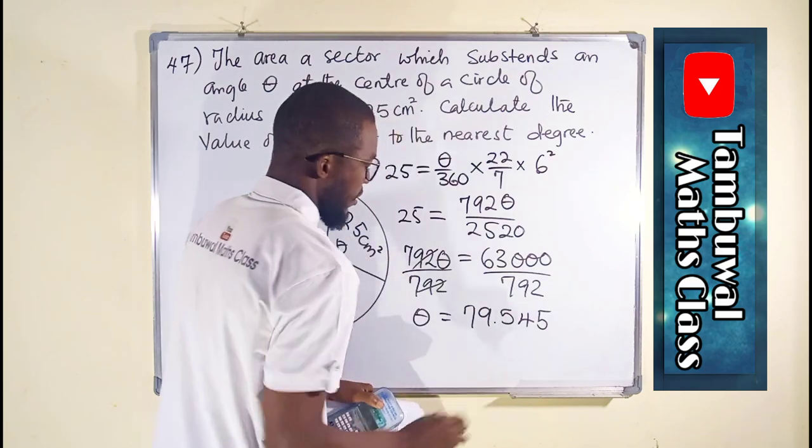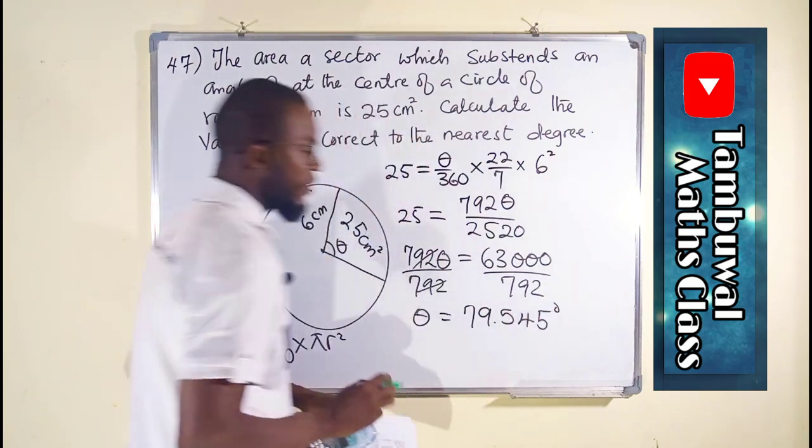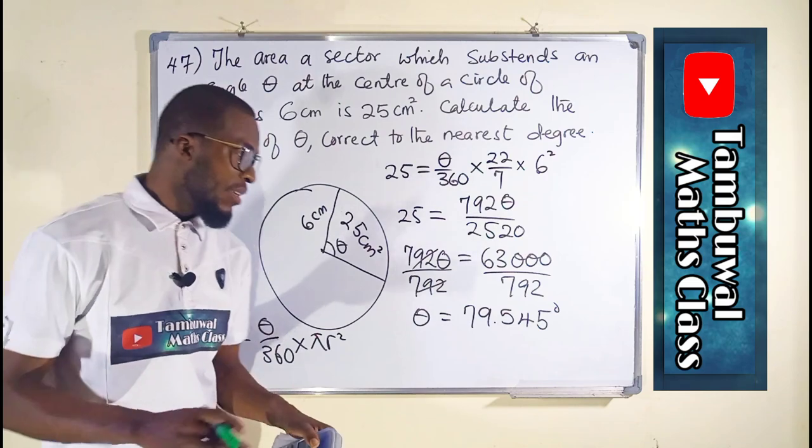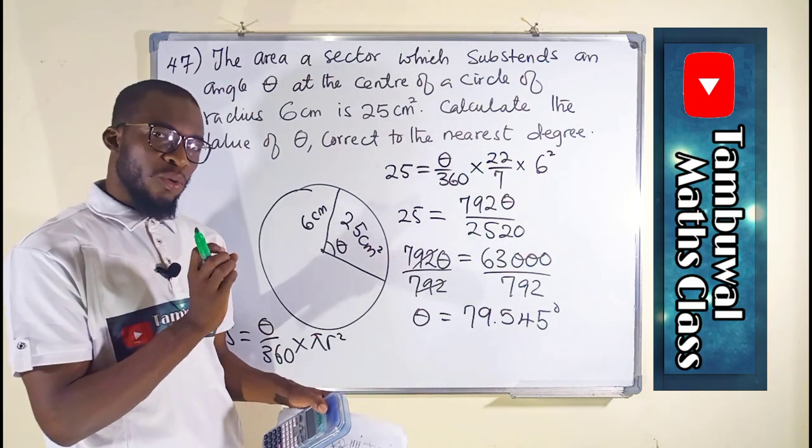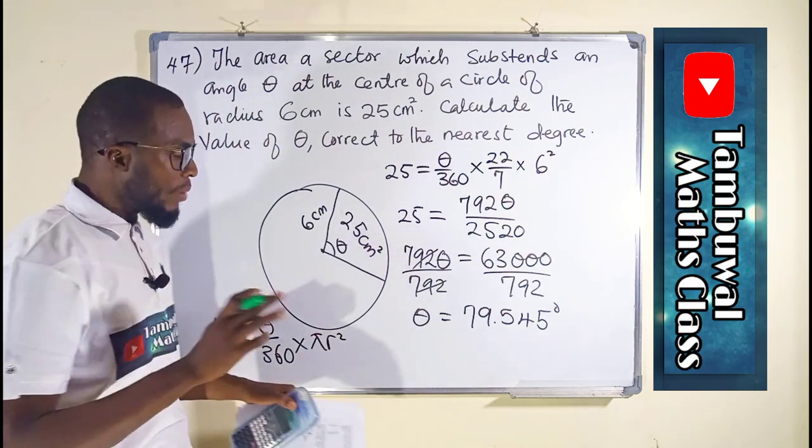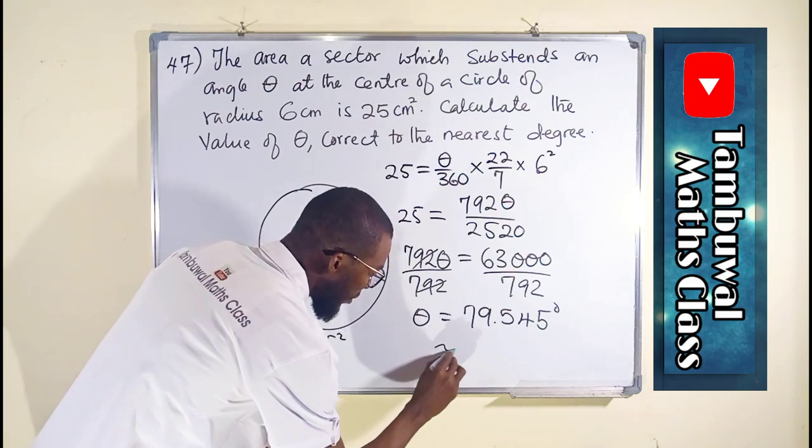79.545 degrees, but remember the question says to the nearest degree. So therefore we are going to take the whole number apart and discard the decimal part.